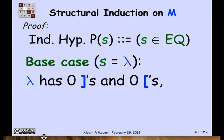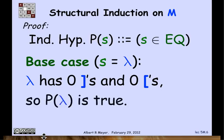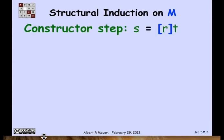It has zero right brackets and zero left brackets, so it does have an equal number of left and right brackets. So we've established that the base case P of the empty string is true. Now we have to consider the constructor case. In the case of M, there's only one constructor.